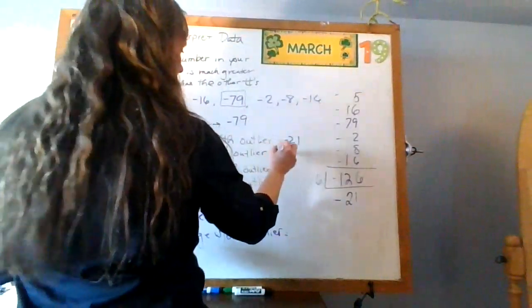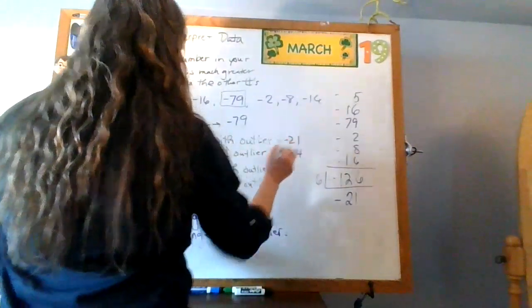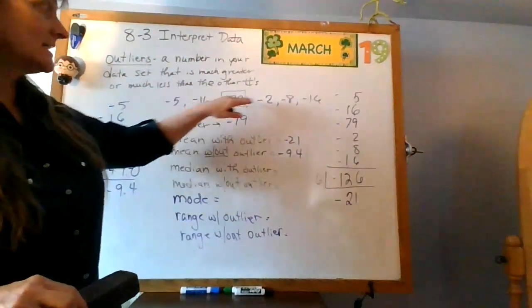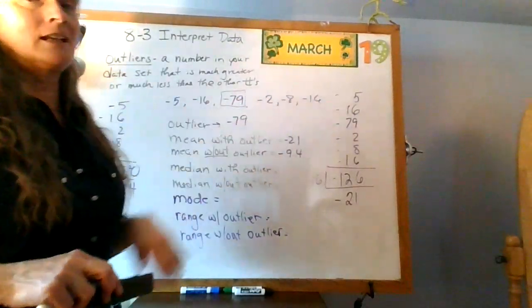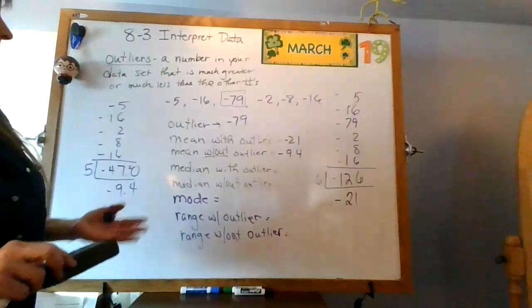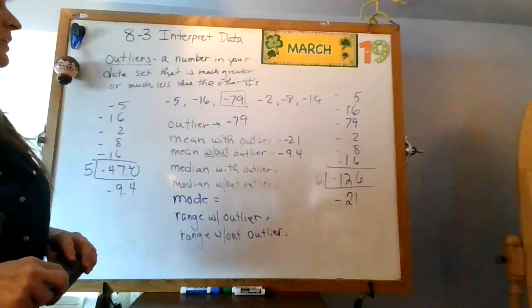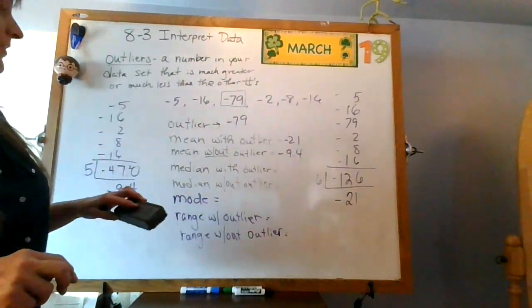Okay, negative. Sorry. Negative 9.4. Now let's look at my numbers. Negative 5, negative 16, negative 2, negative 8, negative 16. Negative 9.4 is right there in the mix, right? Right kind of in the middle, which is what my mean is supposed to be. Not something that's way out there.